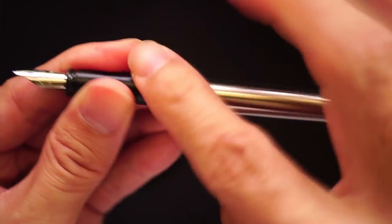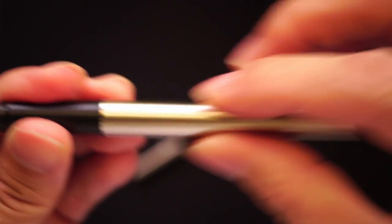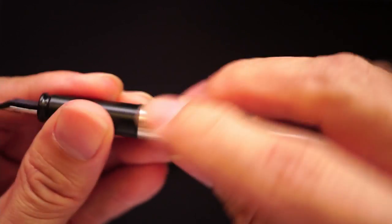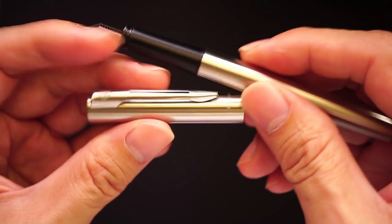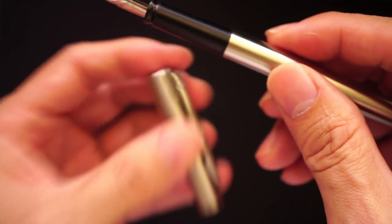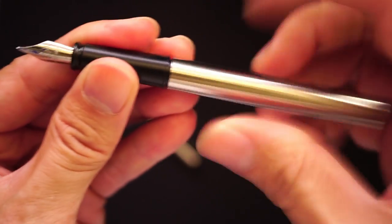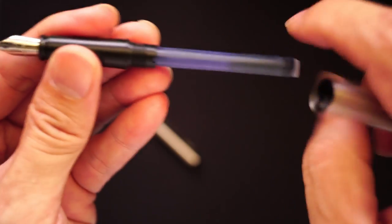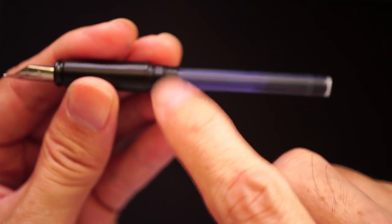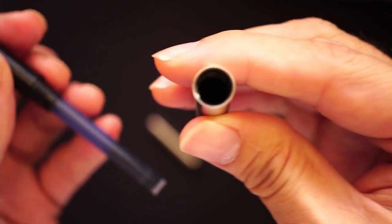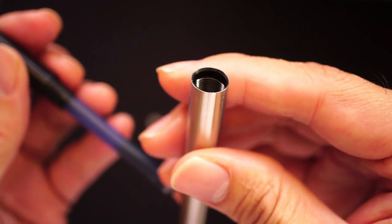And inside you get the barrel. Pretty unadorned barrel. The whole pen is in brushed, I guess it's aluminum. And you get plastic threads on the section or the grip area, and you get plastic threads inside the barrel as well.